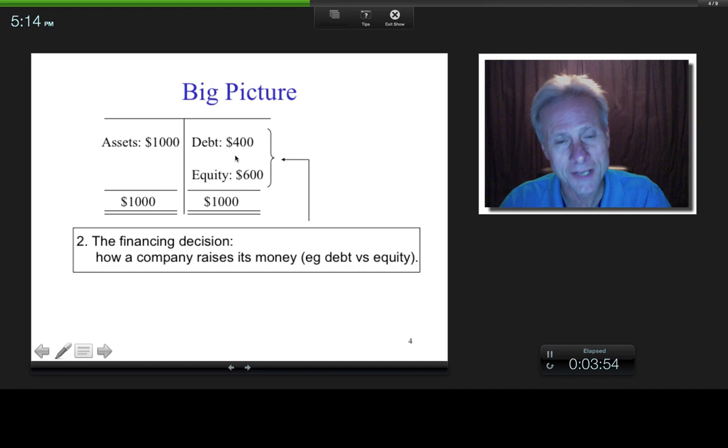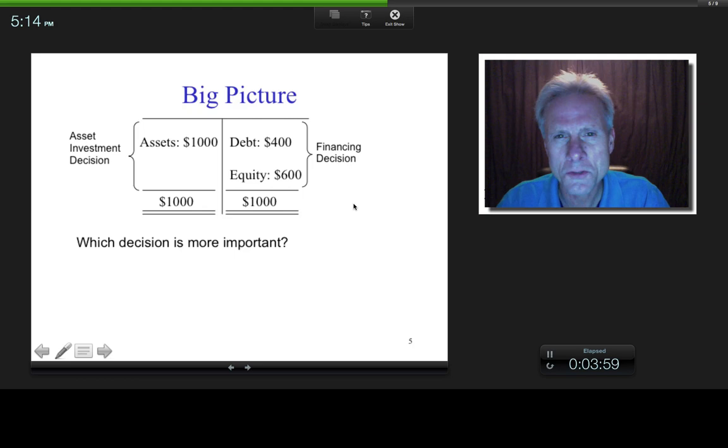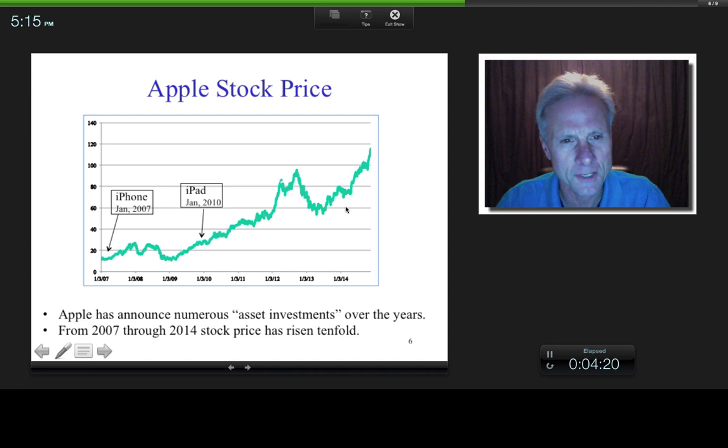So which of these two decisions do you think is more important? Well, let's think about this. Let's take Apple for example. Everybody seems to have heard of Apple. Apple seems to be all over the world for the most part. So when you think about Apple, let's take the last, I don't know, seven, eight years or whatever. Here we have 2007 and that's their stock price on a split adjusted basis. They've had some stock splits since then. And they've basically gone up tenfold.